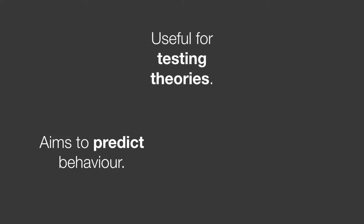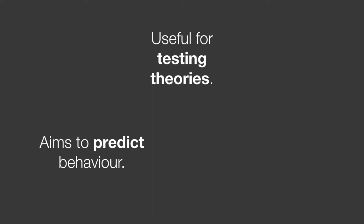Three crucial features of positivism: it aims to predict behavior — and when applied in social sciences, this is about predicting human behavior. It's useful for testing theories and also for observing whether a phenomenon is actually happening. For example, a generalized standardized test might help us understand whether there are gaps in education outcomes within a particular population. It also looks for hard rules or laws — positivist approaches are aiming to find universal truths and absolute laws that apply in all circumstances.